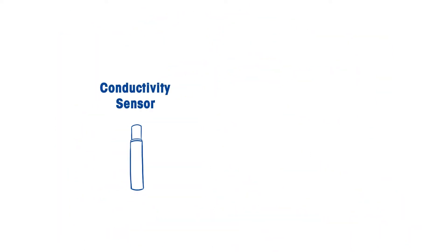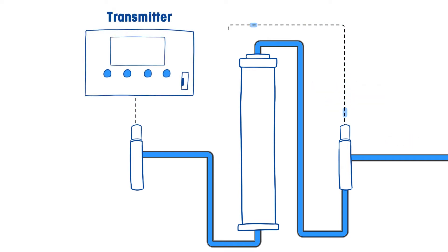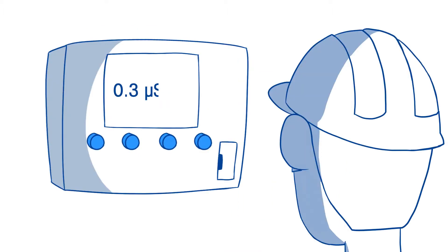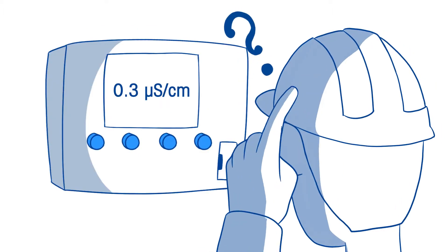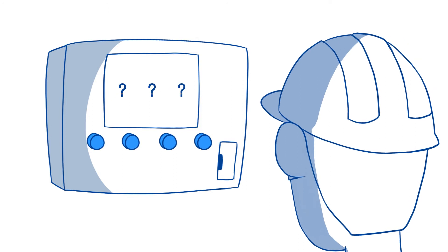As a cost-effective substitute for ppb-level measurement, plant chemists have relied on cation conductivity to monitor corrosion. However, while conductivity may provide an indication of change in corrosive conditions, it does not provide concentration levels of chloride and sulfate to ensure they are within acceptable limits.